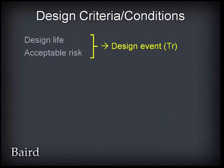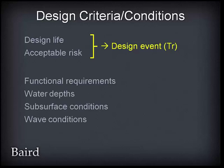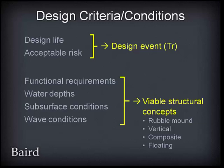When discussing design criteria and conditions, the client typically defines the design life and acceptable risk of damage or failure, which together define the return period of the design event. Other parameters include functional requirements, water depths, subsurface conditions, and wave conditions — and these effectively define what structural concepts may be viable. These may include rubble mound, vertical, composite, or floating structures. Today we are focusing on rubble mound structures.